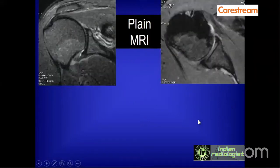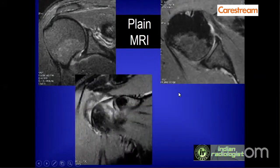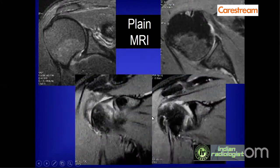Fat-suppressed lesions are seen in various planes: the coronal plane beautifully shows the superior and inferior labrum, the axial image shows the anterior and posterior labrum via the glenohumeral ligament, and two additional images show the biceps labrum complex.